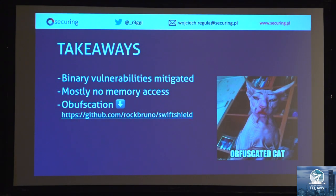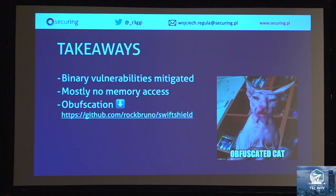Takeaways from this section: Swift protects your application against typical binary vulnerabilities and enforces deliberate usage of insecure methods like 'UnsafePointer'. There is no obfuscation — if you want to make your application harder to reverse engineer, you can use Swift Shield, which is free, open source, and works well.